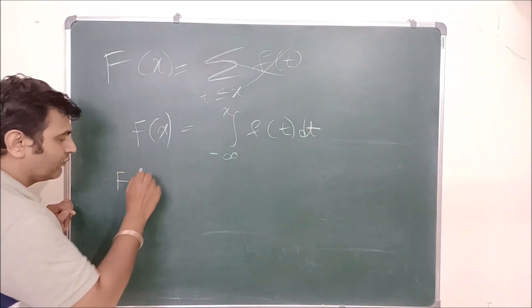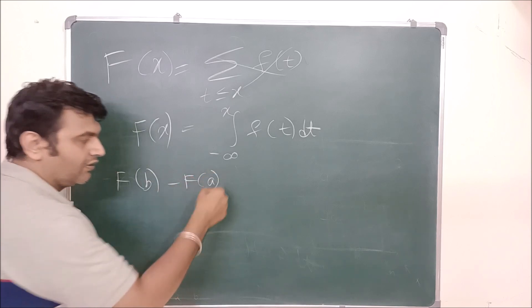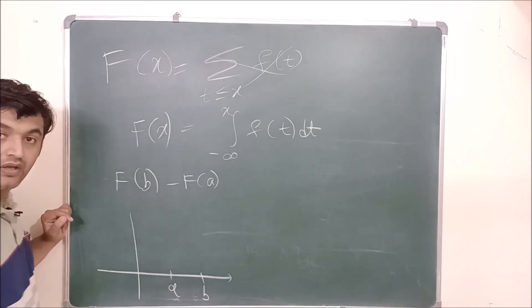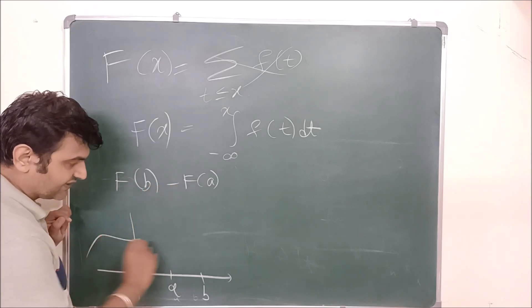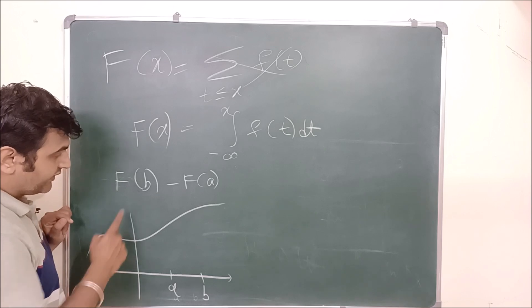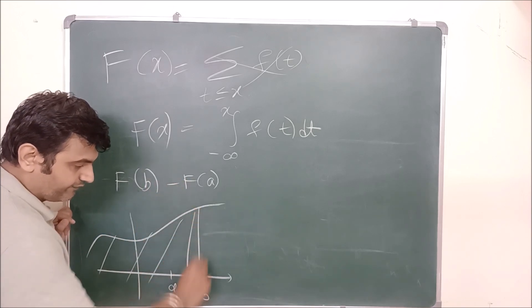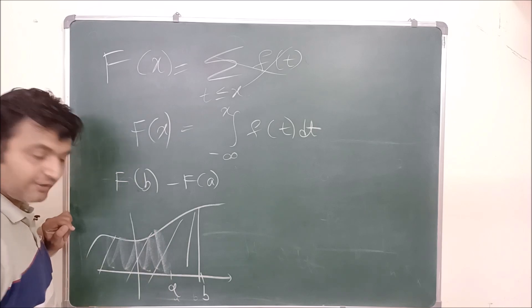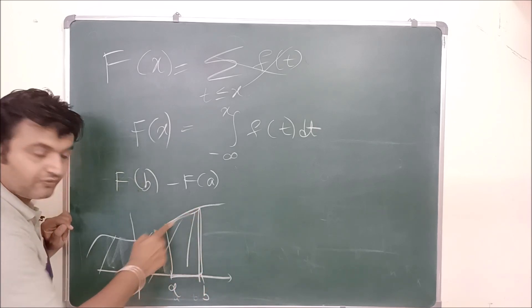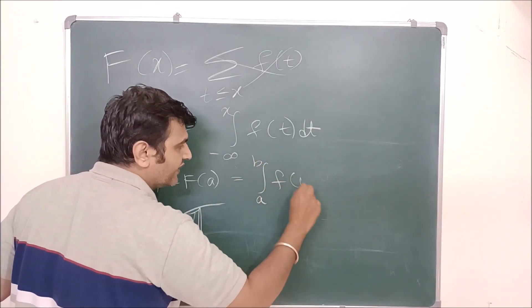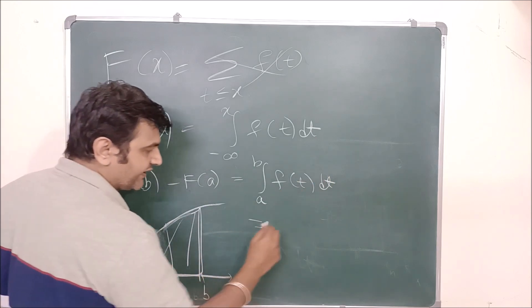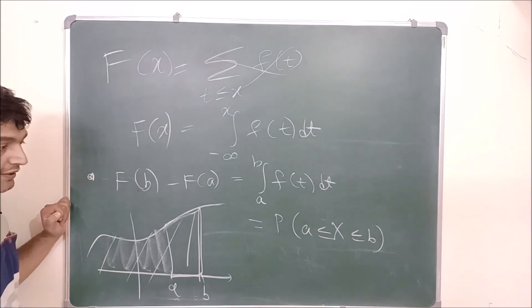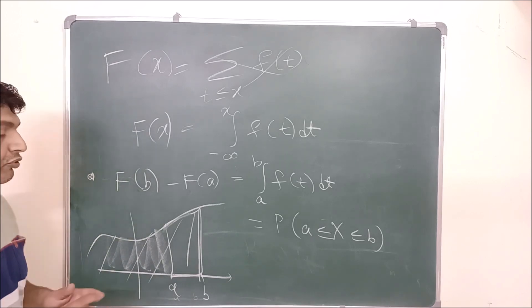Now a few simple observations. What is F(B) minus F(A)? F(B) is the integral from minus infinity to B — that is the area under the curve up to B. And F(A) is the integral from minus infinity to A — that is the area up to A. When you subtract, you get the area between A and B, which is the integral from A to B of F(t) dt. And this is nothing but the probability that X will take a value from A to B. So this is one nice relation between the cumulative distribution function and the probability density function.